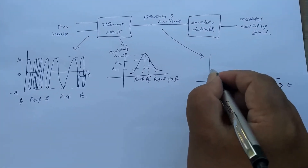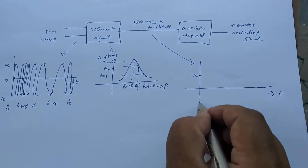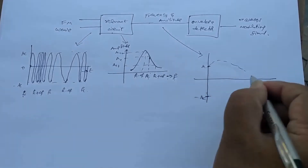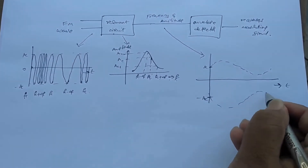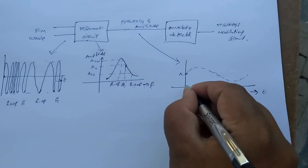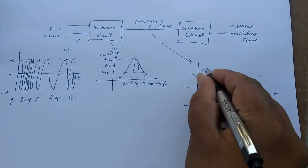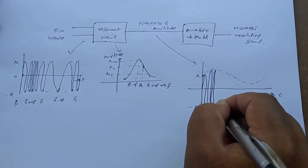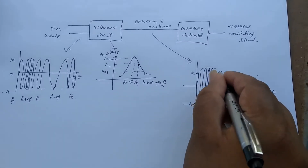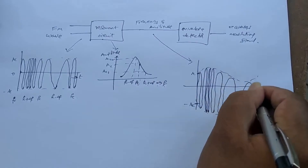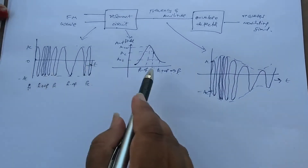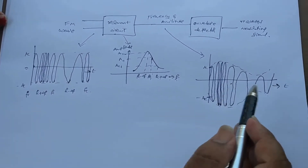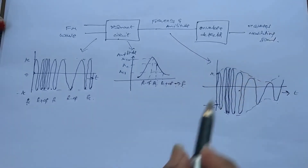The output of the resonant circuit shows that the amplitude is no longer fixed. Earlier for the FM wave, amplitude was fixed. Now the amplitude varies, similar to an AM wave — it is combined frequency and amplitude variations. Where the amplitude is very high, we get a very low time period or high frequency. So the FM wave, through the resonant circuit, is converted from frequency variations into both frequency and amplitude variations. We then use the envelope detector to get back our recovered modulating signal.